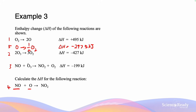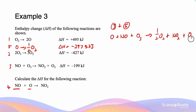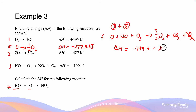Adding equations 3 and 5, we get O, NO, and O₃ on the left, and ½O₂ plus NO₂ plus O₂ on the right. Combining the oxygens gives 3/2 O₂ and NO₂. We call this equation 6, with delta H equal to minus 199 plus minus 297.5, which equals minus 396.5 kJ.